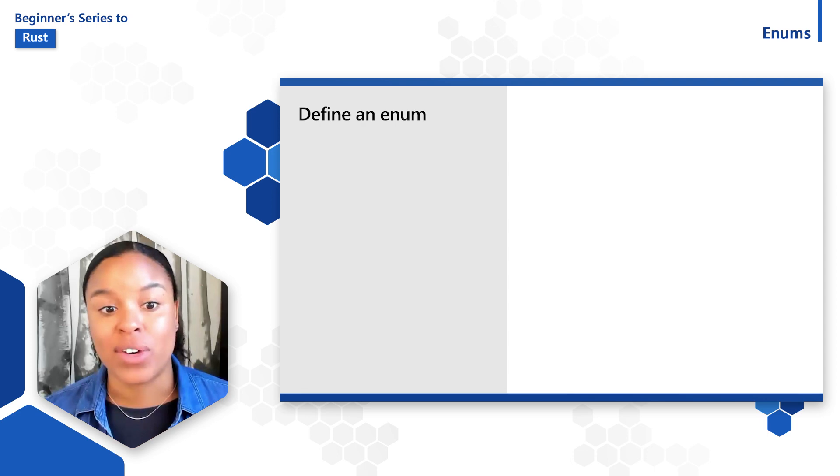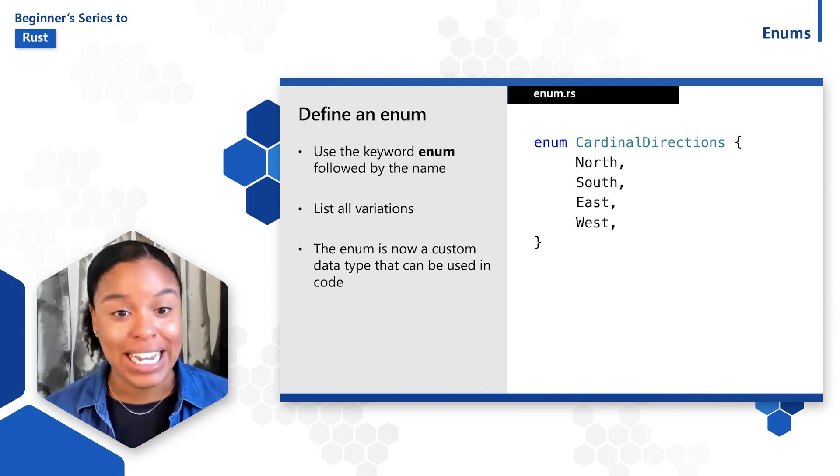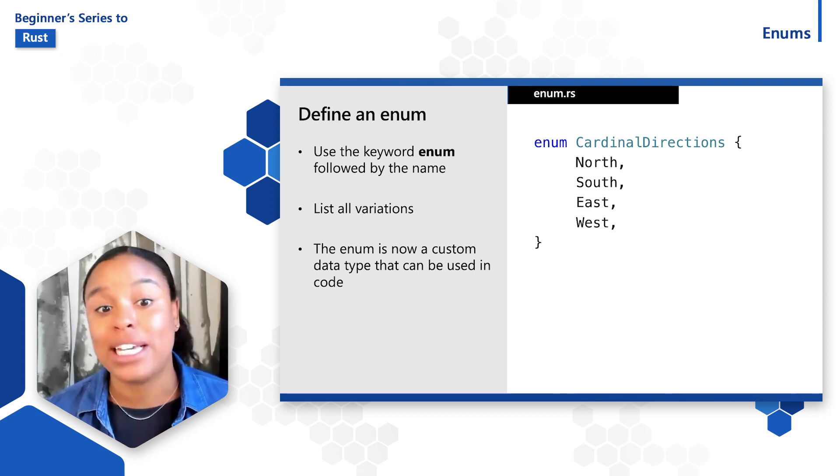Let's explore an example of what an enum can contain to give you a better idea of how to use them. Say that we want to list all variations of cardinal directions. Our enum would be called cardinal directions and can be defined using the keyword enum before the name. And in the enum, the variations would be north, south, east, and west.